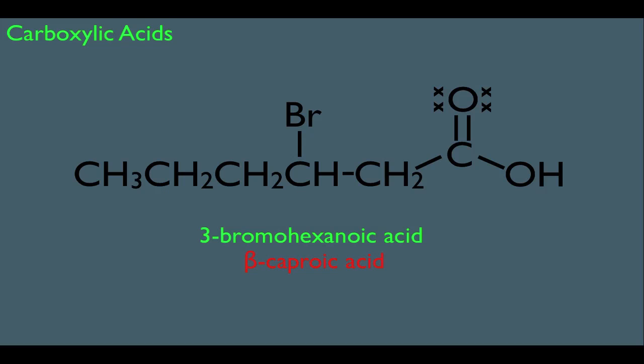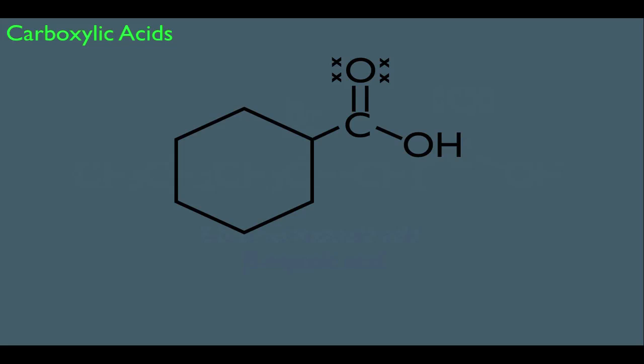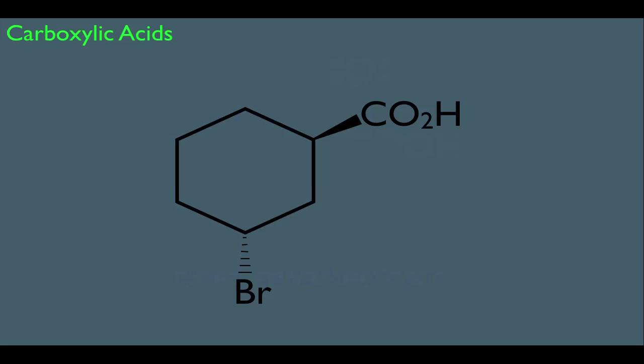What about cyclic structures that have carboxylic acids? This molecule is cyclohexane carboxylic acid—the actual IUPAC name. This is the parent name of the molecule, which means if we have a cyclohexane with substitutions, the carboxylic acid takes priority over the Br. Therefore, when numbering this molecule, this would be carbon 1 on the cyclohexane, this would be carbon 2, and this would be carbon 3.